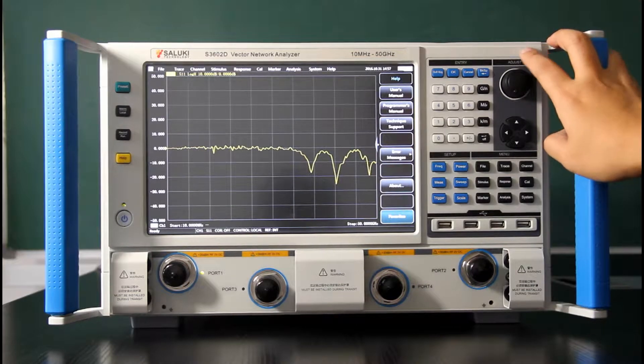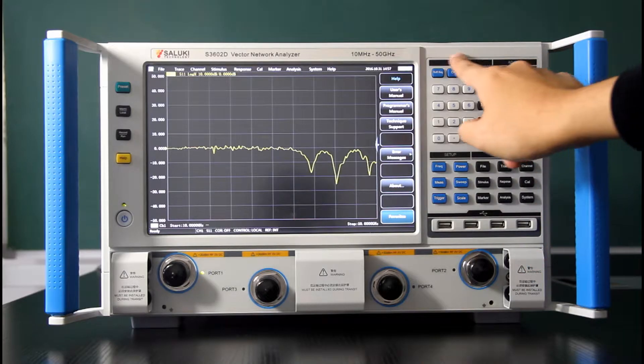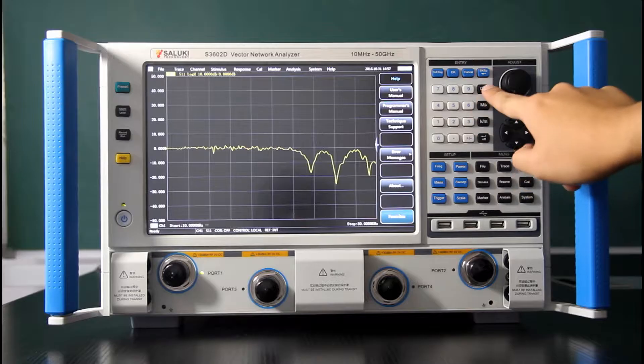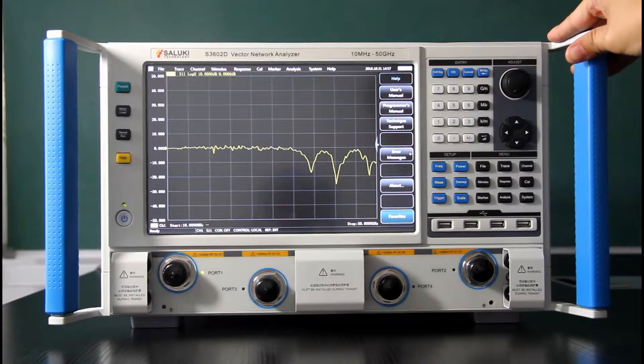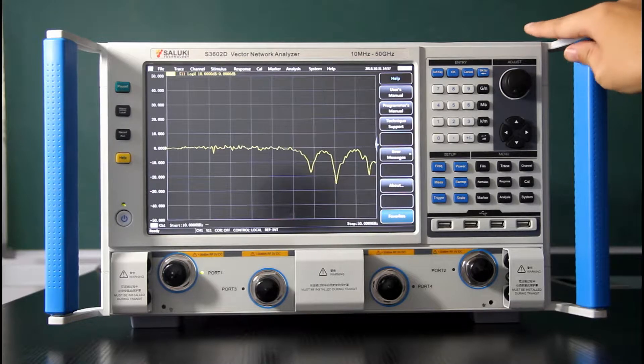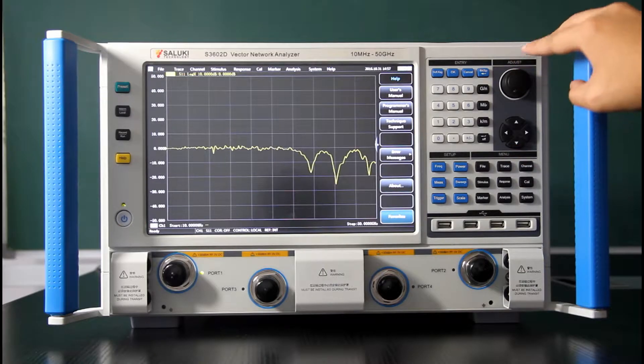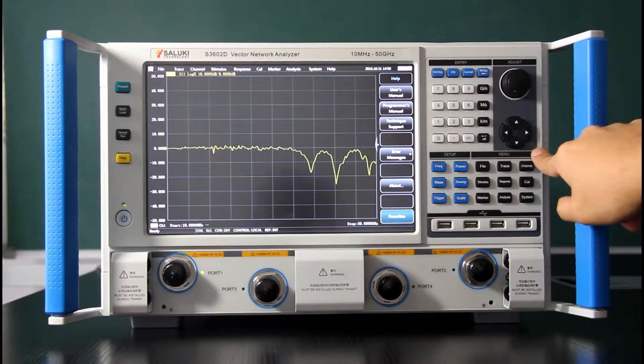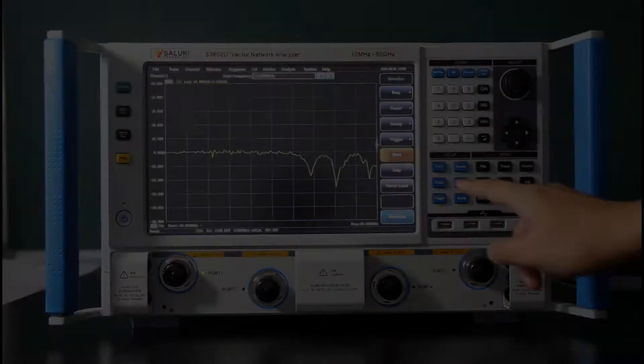On the right side, the keys are divided into several zones. First is the entry zone. There are numbers and some units. You use it to enter some parameters like frequency, amplitude. This is the adjust zone. There is a knob to do some micro-adjustment. There are arrow keys to do some selections or to change the parameter.